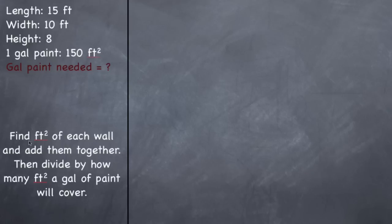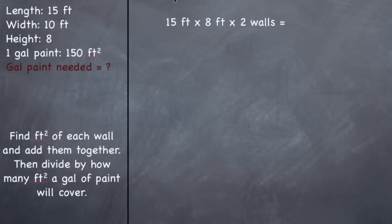What you need to do is find the square feet of each wall — there are four walls in this room — add them together, then divide by how many square feet a gallon of paint will cover. So find the total square feet of the entire room and divide by how many square feet one gallon covers.